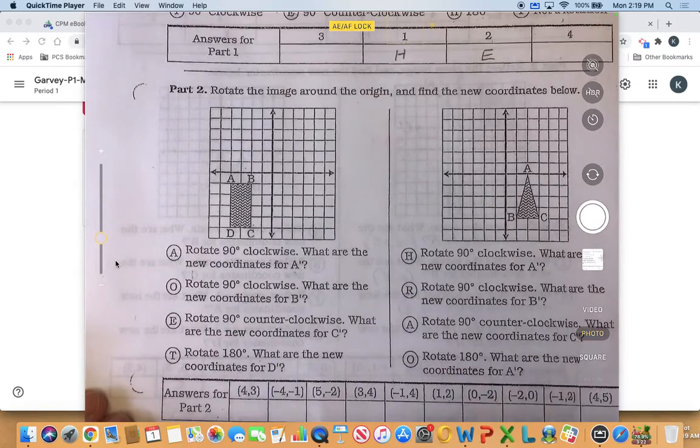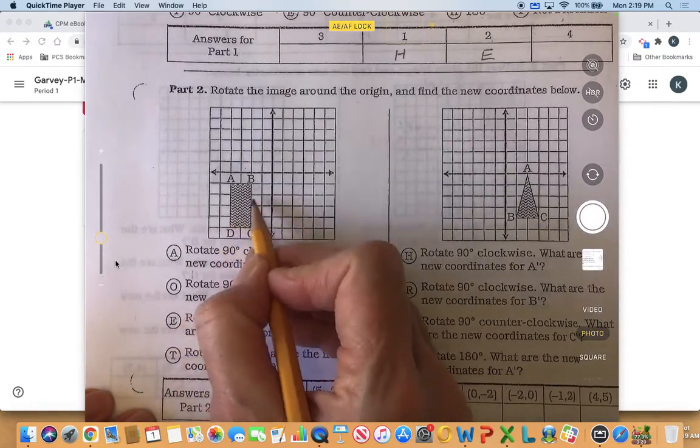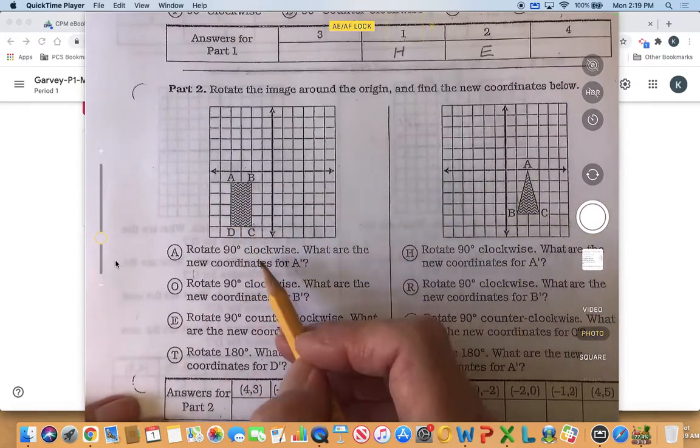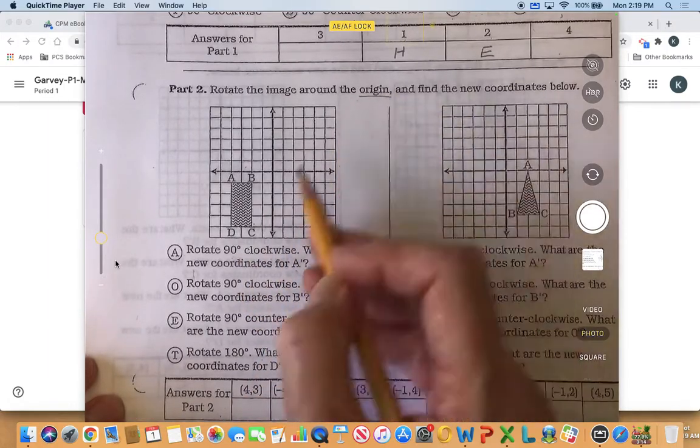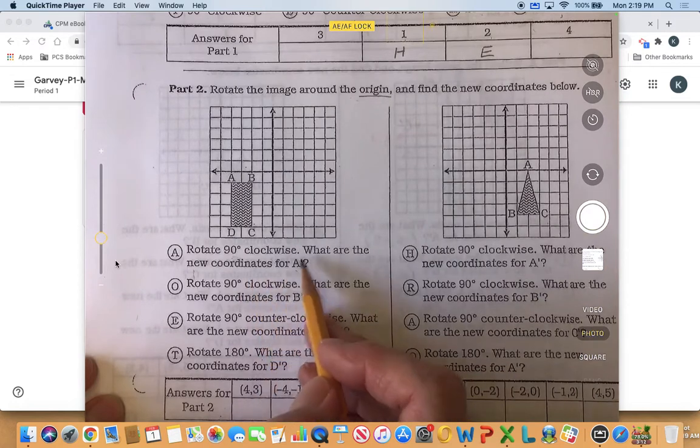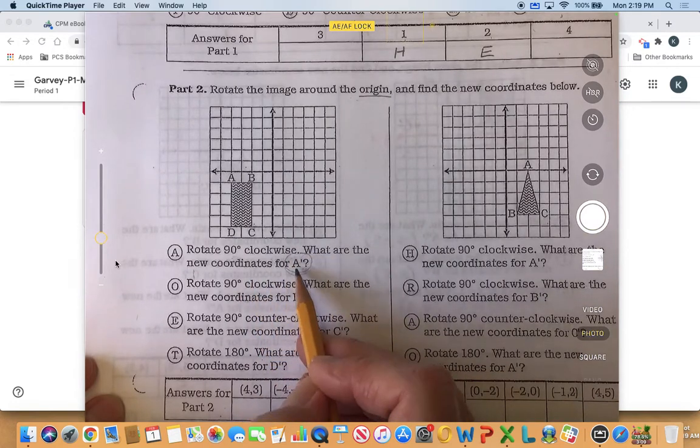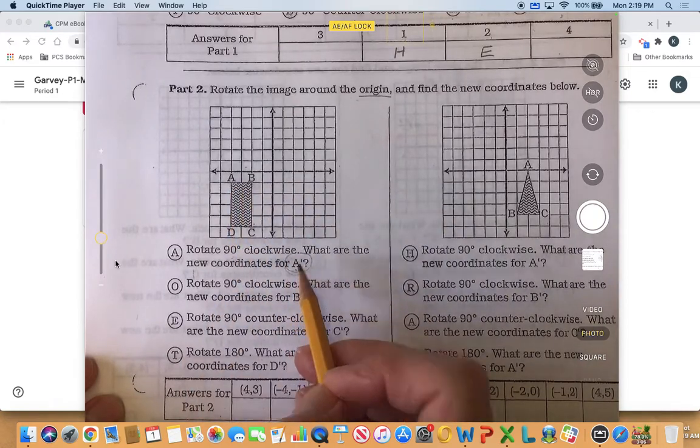Okay, so that means that we're going to rotate this whole figure 90 degrees clockwise around the origin, and then we will find out what are the new coordinates for a, which we will now call a prime.